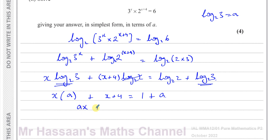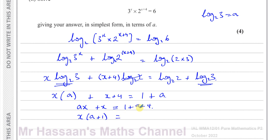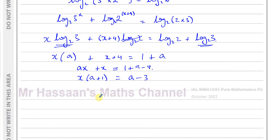So the equation becomes ax plus x plus 4 equals 1 plus a. Keeping x terms on one side: ax plus x equals 1 plus a minus 4, which is a minus 3. Factoring out x gives x times a plus 1 equals a minus 3. Dividing both sides by a plus 1 gives x equals a minus 3 over a plus 1.